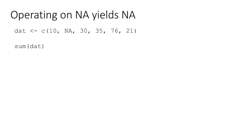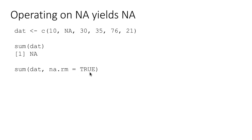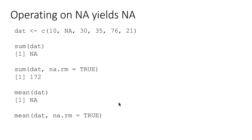On the other hand, if you want to tell the system to perform the addition while ignoring missing values, you can pass the argument na.rm=TRUE. na.rm means remove missing values, and then the operation works fine — you get the actual total without the NA being included. You've seen the same thing in the context of the mean function. If you just do mean(dat), you get no result because there's an unknown value. But if you say mean(dat, na.rm=TRUE), you get a result.